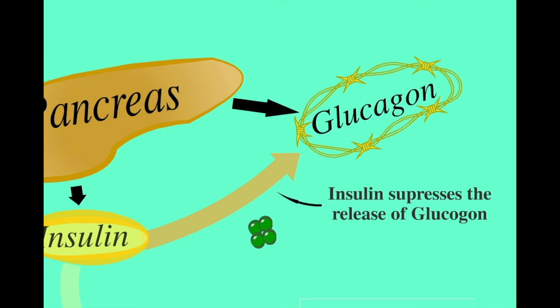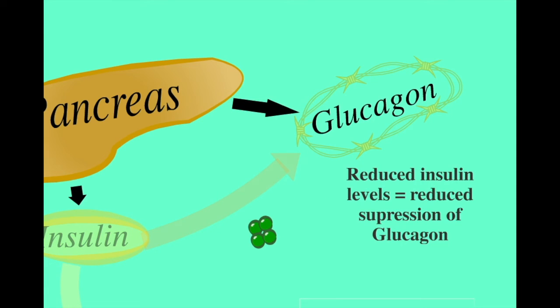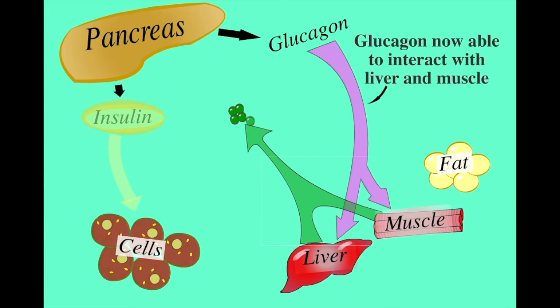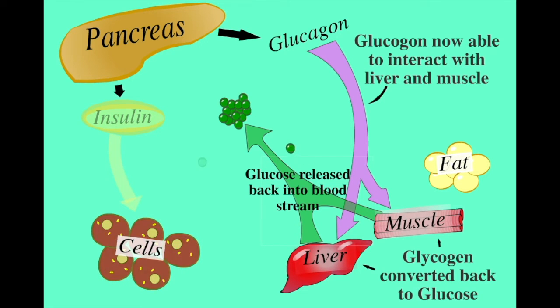However, if glucose levels become low, for example when a patient is fasted, then insulin levels will also drop. With insulin levels reduced, the release of glucagon is no longer suppressed. It can now interact with the liver, stimulating the release of glucose and restoring blood sugar levels to within a safe range.